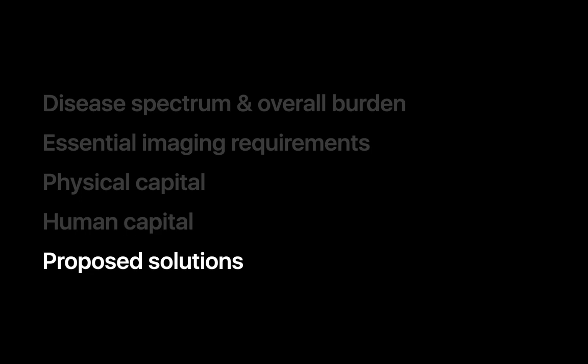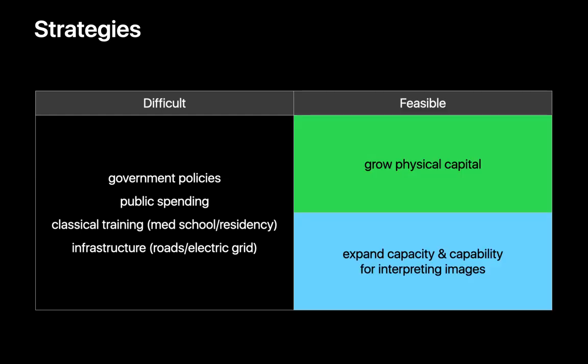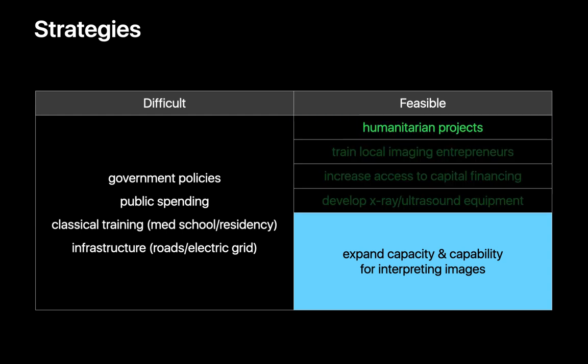So how can we overcome the obstacles standing in the way of medical imaging access in most low-income and many middle-income countries? In a perfect world, enacting new government policies, modifying the distribution of public spending, training more medical professionals, and making large investments in infrastructure could work. But experience and history tell us that accomplishing meaningful change within a reasonable timeframe would be extraordinarily difficult with many of these strategies. So folks have been looking at more feasible strategies instead. Many aim to grow the physical capital for medical imaging and expand the capacity for interpreting medical images. Expanding humanitarian efforts is a start — that can mean physical capital like donated radiology equipment, or human capital like volunteer radiologists.